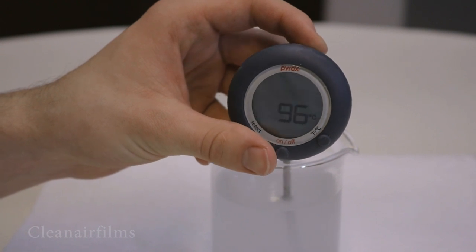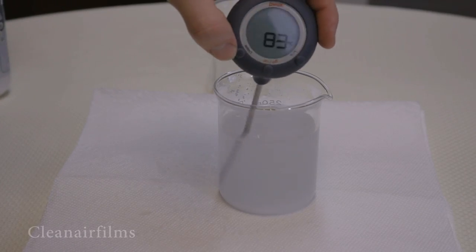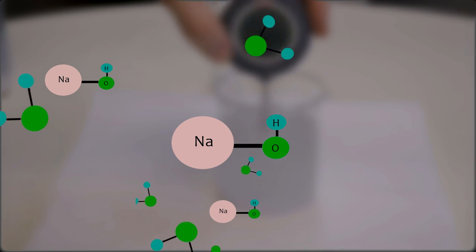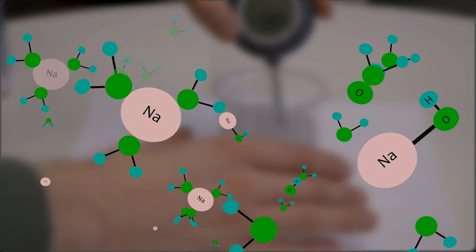Lye is highly soluble in water and is an ionic compound. When it dissolved in the water it separated into its Na and OH ions.